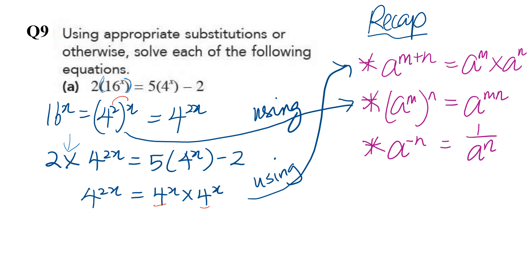Step two: change the brackets to a multiplication sign. Step three: simplify four to the power of 2x using rule one to break it into two terms of the same base — base four — where x plus x gives you 2x. Then apply substitution, replacing four to the power of x with the letter a.